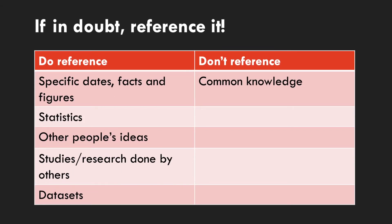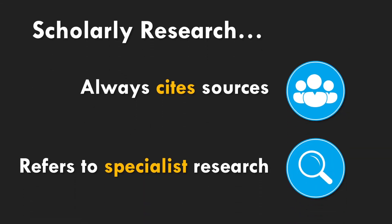We often say don't reference common knowledge, but defining what common knowledge is can be challenging. So do reference if you're using specific dates, facts or figures, statistics, other people's ideas, or if you know that you're relying on studies or research that you've read elsewhere. Scholarly research always cites its sources and refers to specialist research — this is how you can tell when you're working with a valuable and valid piece of information rather than just someone's opinion online.